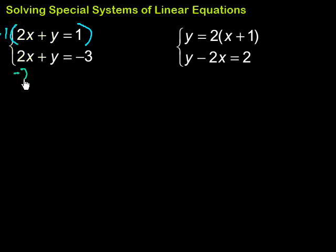So then, when I add vertically, 2x minus 2x is zero, y minus y is zero, so this whole side is zero equals negative three minus one would be negative four.